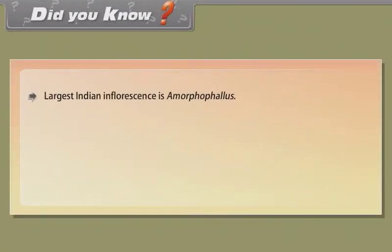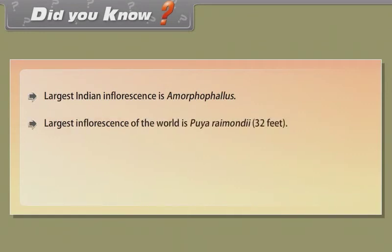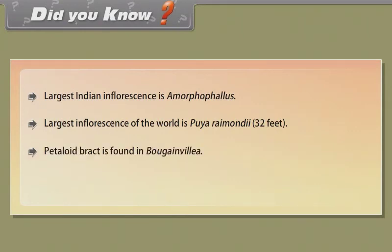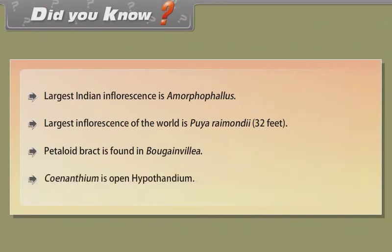Did you know? The largest Indian inflorescence is Amorphophallus. The largest inflorescence in the world is Puya raimondii at 32 feet. Petaloid bracts are found in Bougainvillea. Syconium is an open hypanthodium.